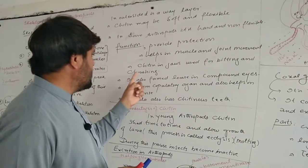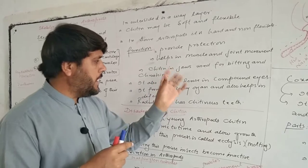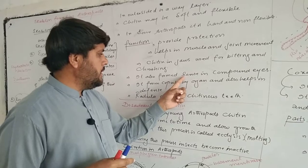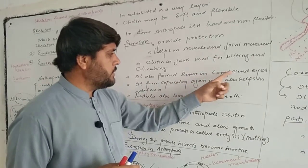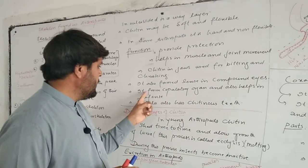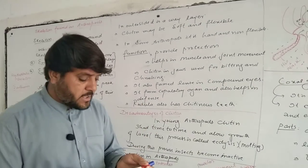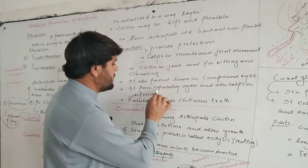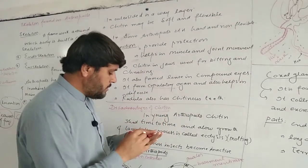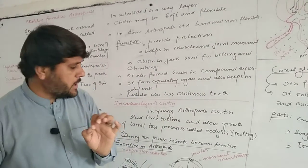Chitin is used in jaws for biting and crushing. In insects, it also forms lenses in compound eyes. It forms copulatory organs and also helps in defense - helping invertebrates defend their body.